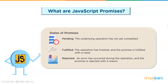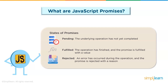A promise has three states. First is the pending state, which indicates the underlying operation has not yet been completed. Next is the fulfilled state, which indicates the promise has been fulfilled with a particular value. Lastly, rejected indicates that an error has occurred during the operation and the promise is rejected with a particular reason.